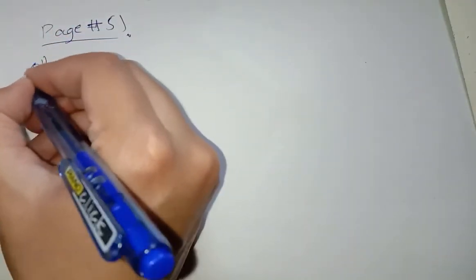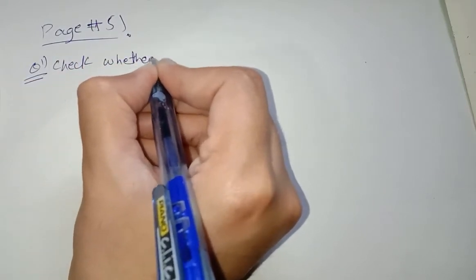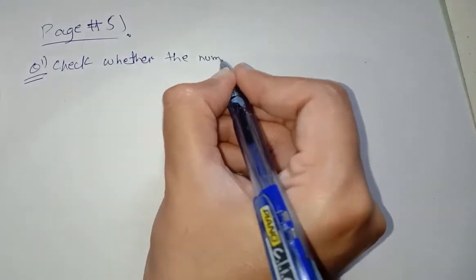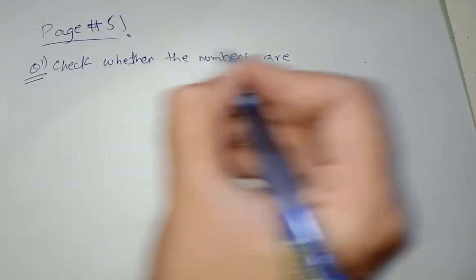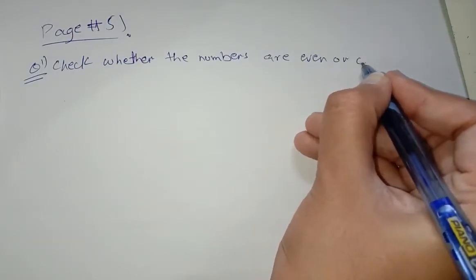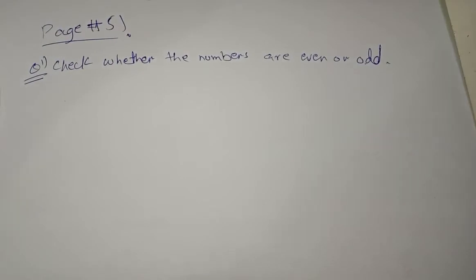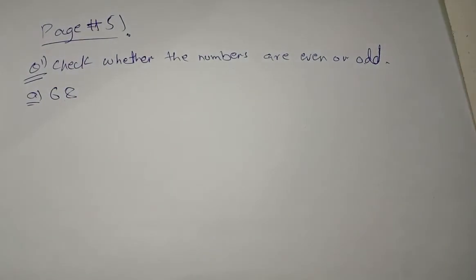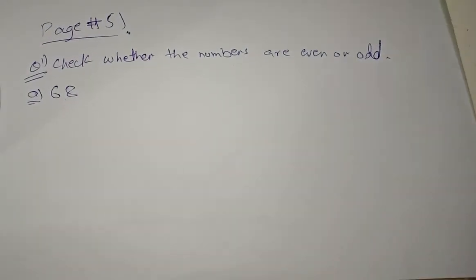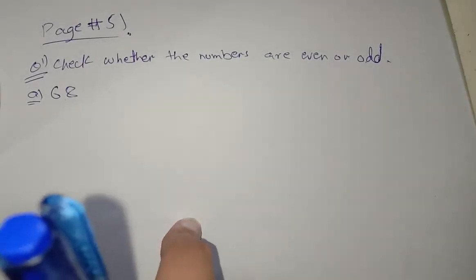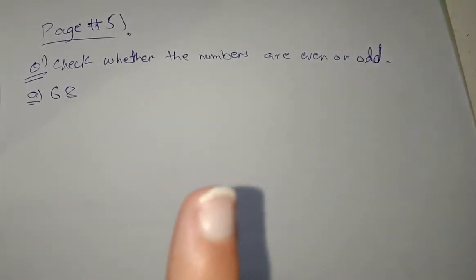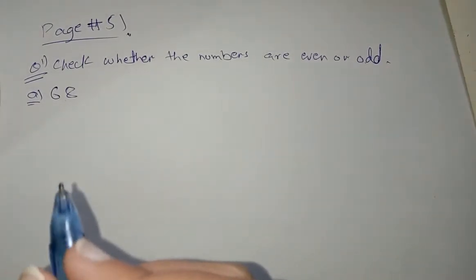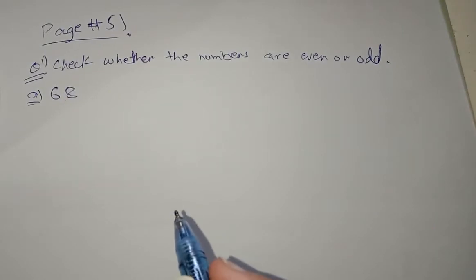Page number five, question number one: check whether the numbers are even or odd with the division method. Now we can do part a, which is 68. As we discussed in our previous video, numbers which are divided by two with no remainder are even. If the number has a remainder, the number is odd. We have to solve it.